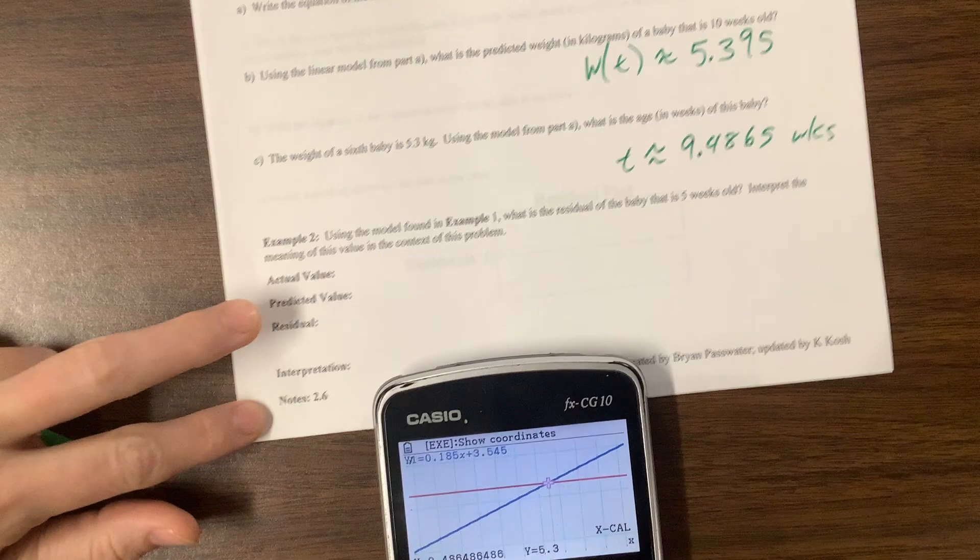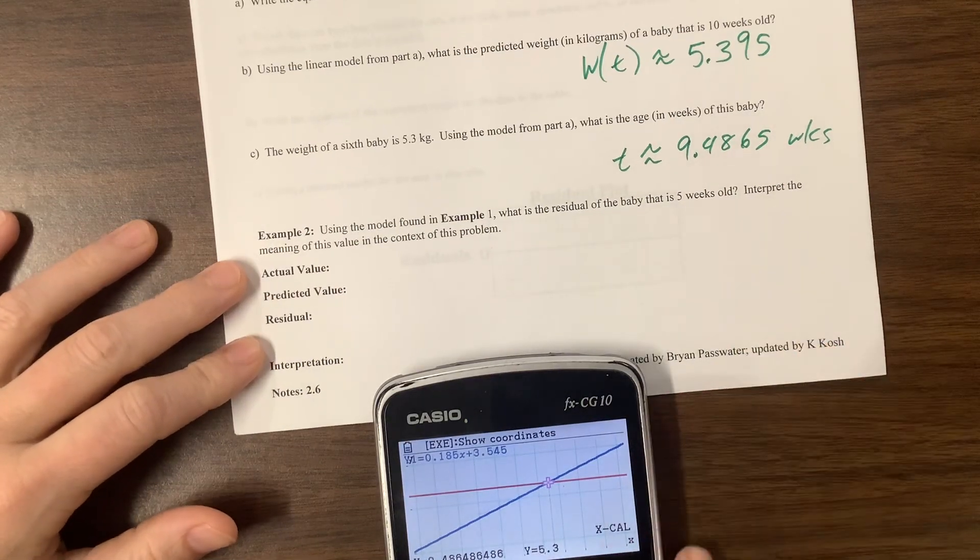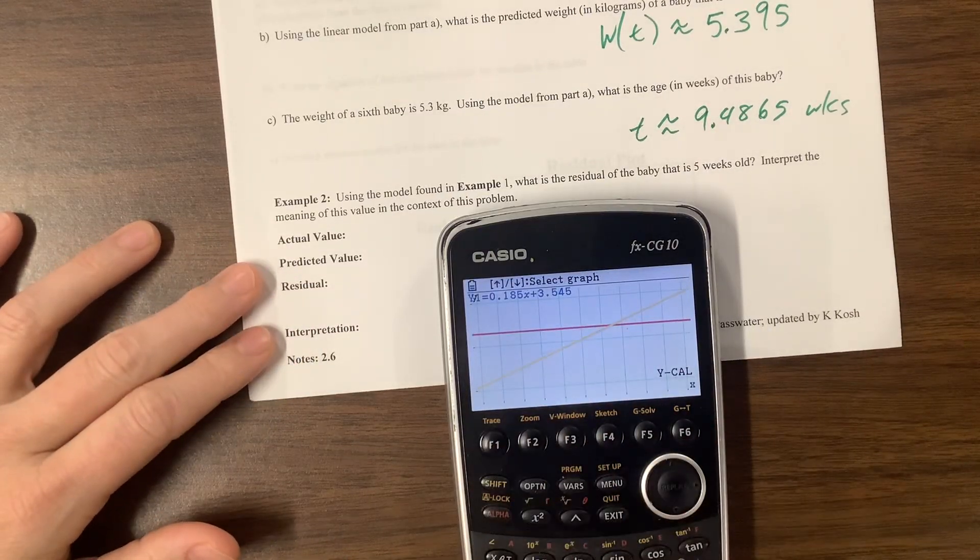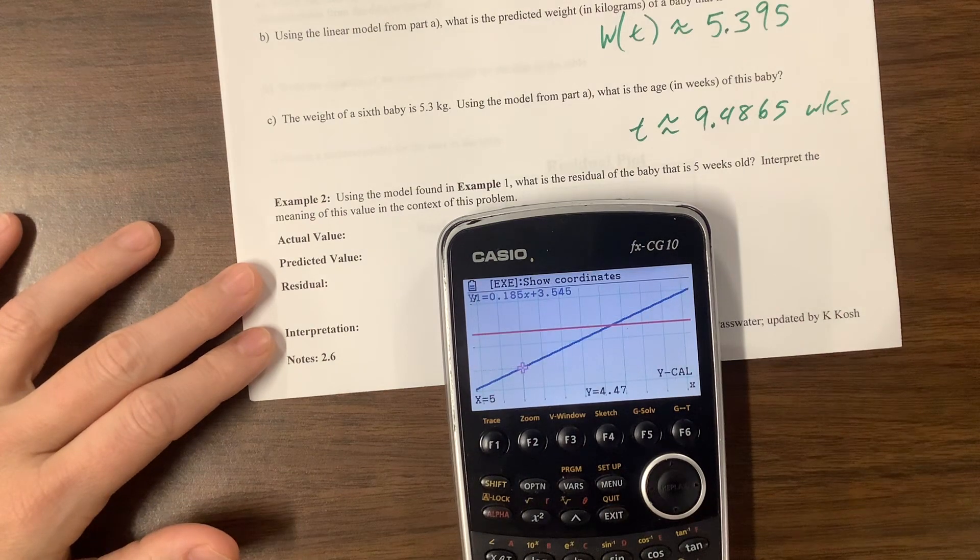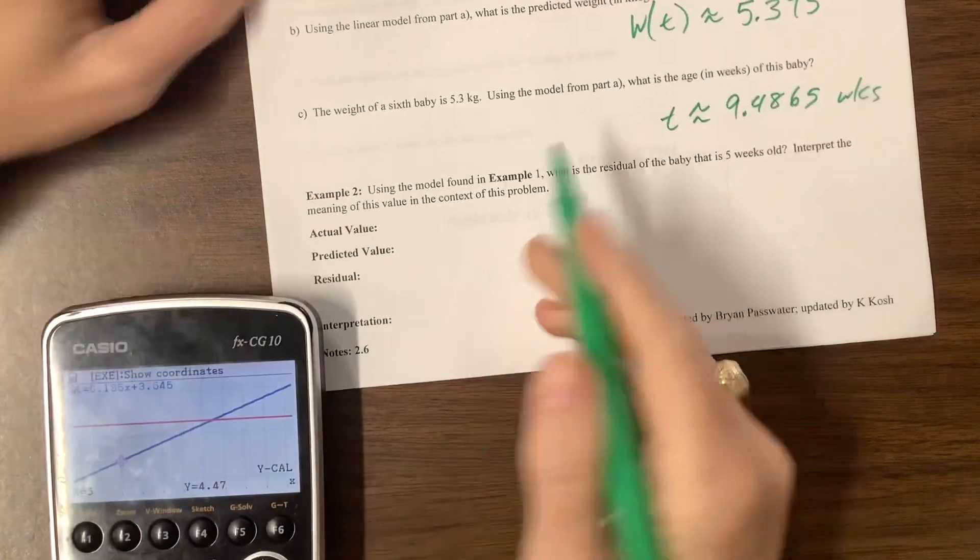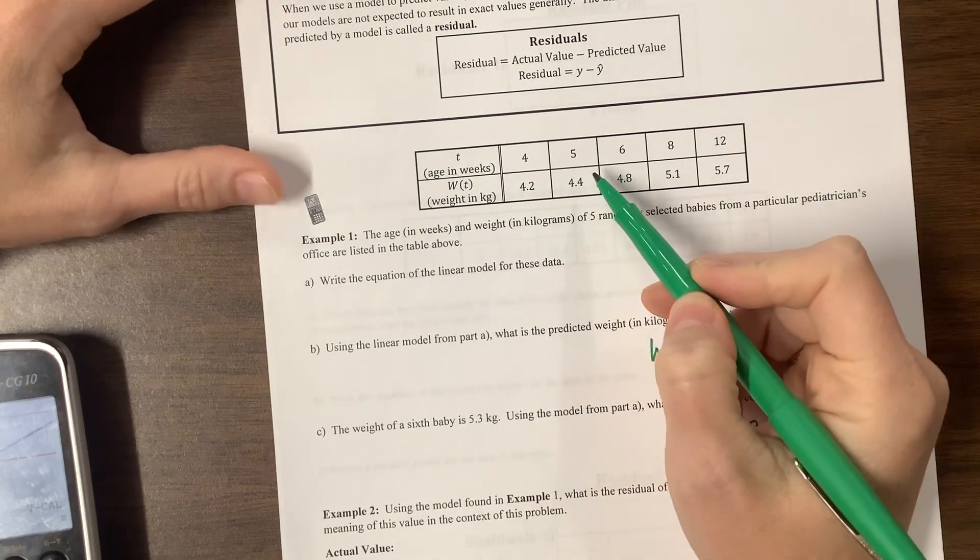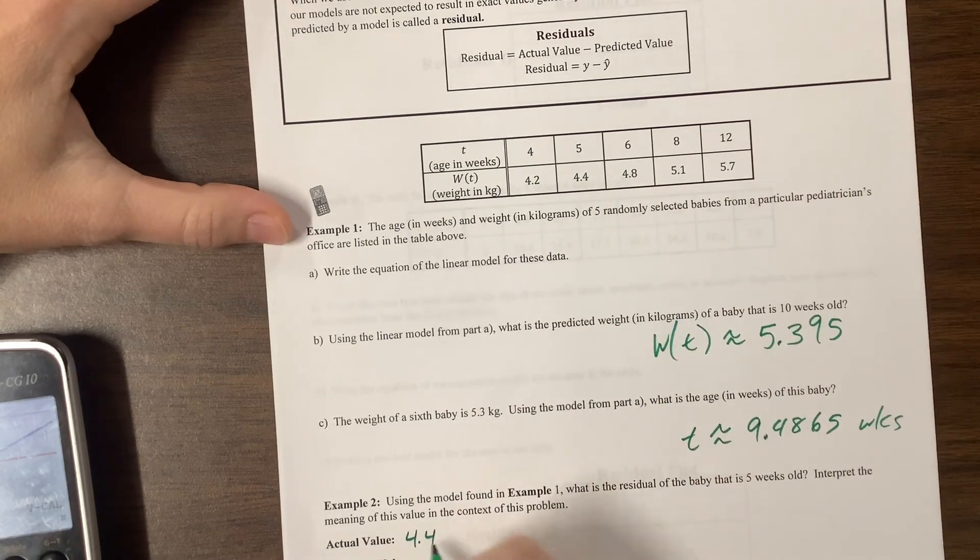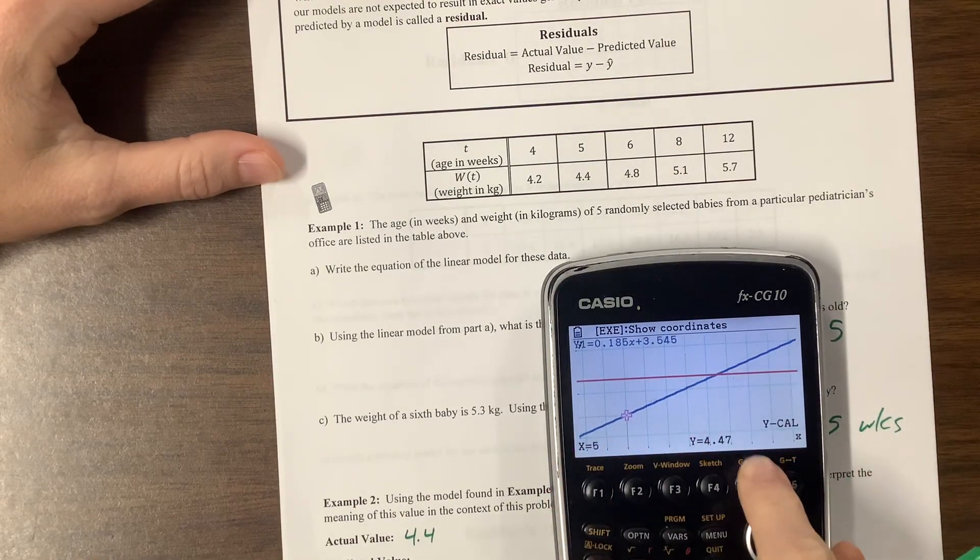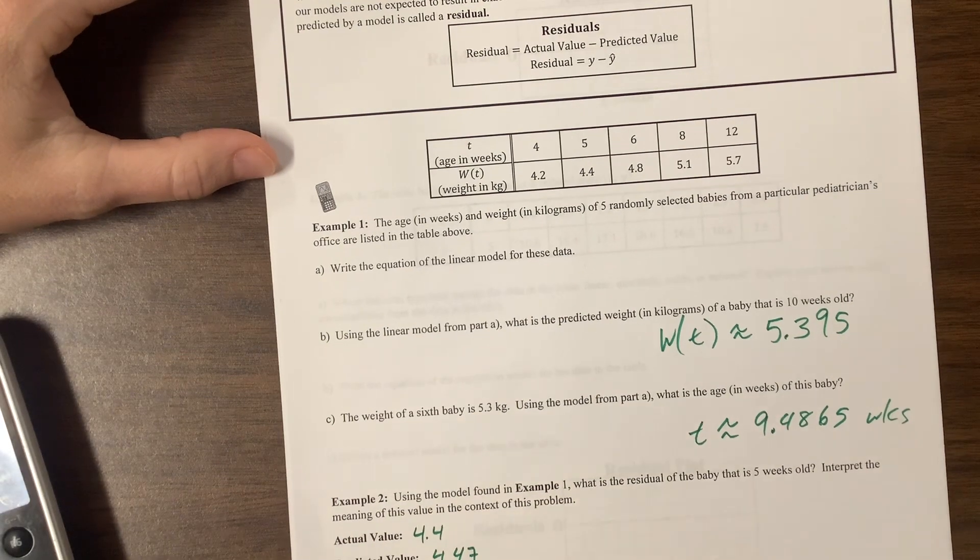So it says, using the model, what is the residual of a baby that is 5 weeks old? So the predicted value would be g-solve. We'd come over and do y-cal with this equation. When the baby is 5 weeks old, we expect it to be 4... Well, the actual, okay, I'm sorry. Here we go. Five weeks, the actual weight was 4.4. The predicted value is what I just found in my calculator, that when x equals 5, the y value is 4.47.